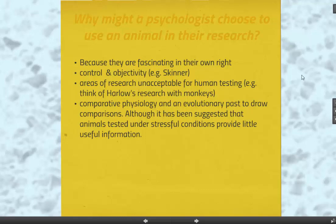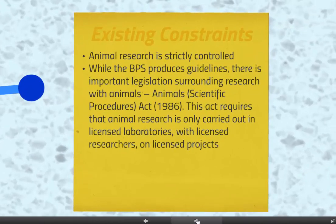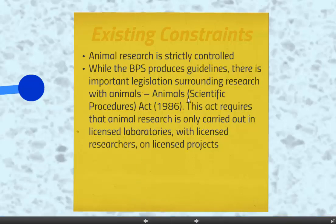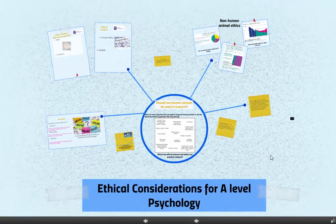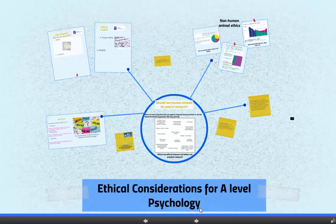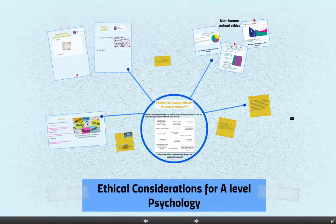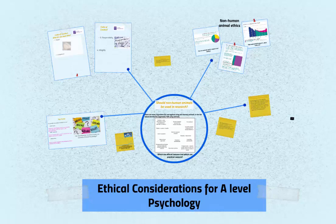Moving on to existing constraints: animal research is very strictly controlled. There are slides here covering the Scientific Procedures Act 1986. And that concludes the slideshow on ethical considerations, which we will do more on in class. We'll do more activity on that in class. Thank you.